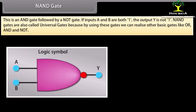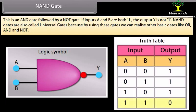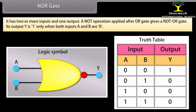NAND gate: This is an AND gate followed by a NOT gate. If inputs A and B are both 1, the output Y is NOT 1. NAND gates are called universal gates because using them, we can realize other basic gates like OR, AND, and NOT. NOR gate: It has two or more inputs and one output. A NOT operation applied after an OR gate gives a NOR gate. Its output Y is 1 only when both inputs A and B are zero.